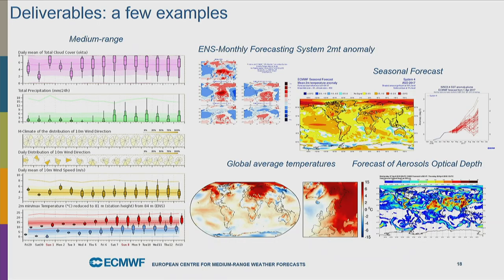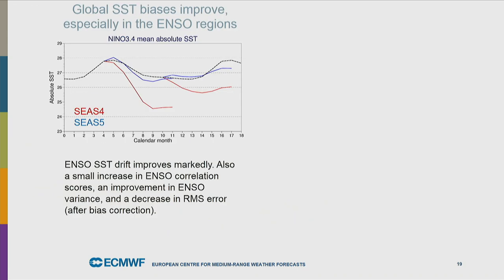The forecast products we offer cover a wide range of time and space scales: medium-range meteograms, monthly forecasts, seasonal range forecasts, atmospheric composition forecasts, and reanalyses. All of this is available to our member states and some to the world community at large. The seasonal forecast system has been in operation since the 1990s. We introduce a new seasonal forecast system every five or six years, and Franco will give much more details about the seasonal range forecast system.